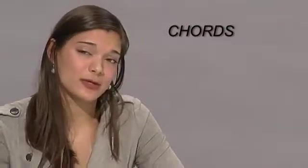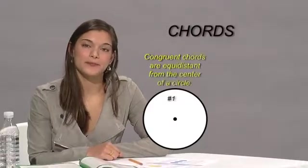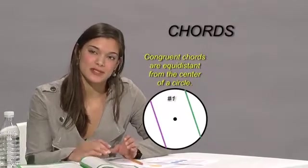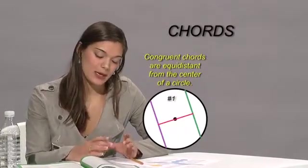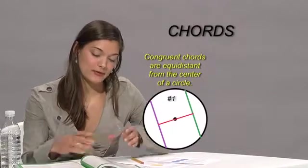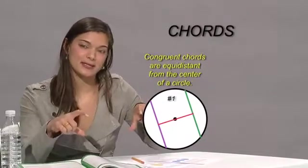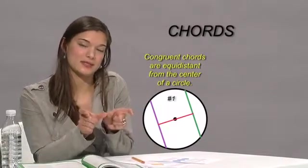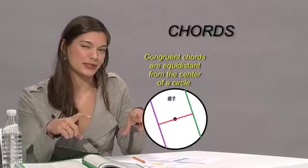One thing about chords is if they're congruent, then they're the same distance from the center of a circle. And that just means that if you have two, if they're the exact same length, then they're going to be the same distance from that center. Congruent just means the same.